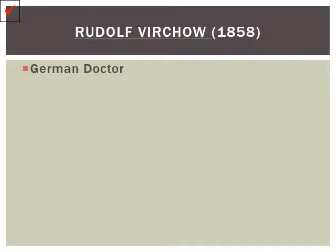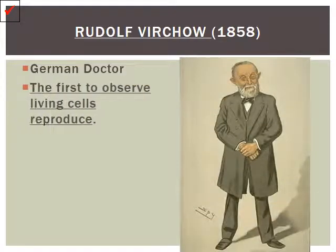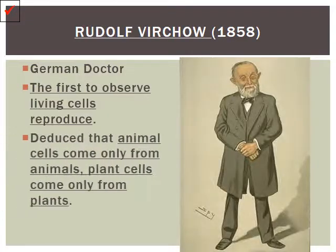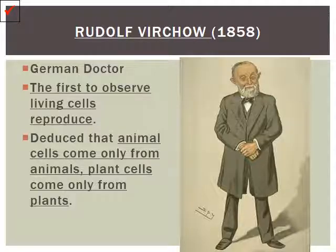Rudolf Virchow was a German doctor, and he was the first individual to observe cells reproducing, or making copies. He deduced that animal cells will always produce animal cells, and plant cells will always come from plants. So you won't see a plant cell go through mitosis and have it result in an animal cell.